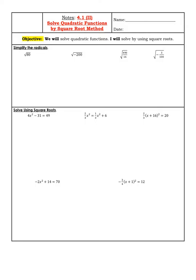To start things off, I'm just going to do a few examples of simplifying radicals. That means we're taking the square root of numbers that don't necessarily have a perfect square root. Instead of getting it in decimal form, you break it down into factors where one of them can be square rooted and the other one can't.